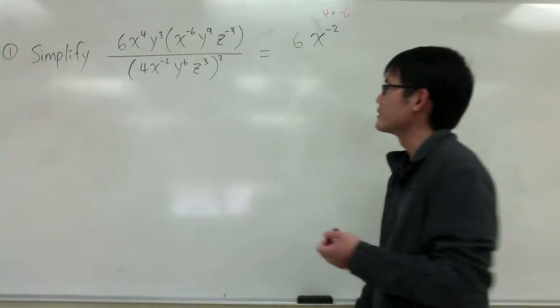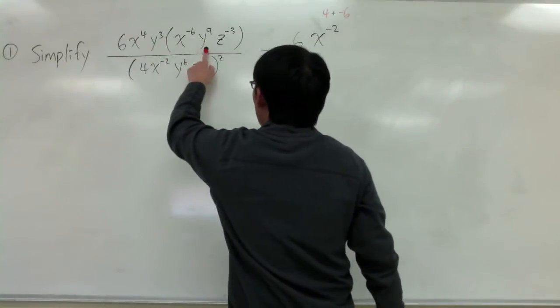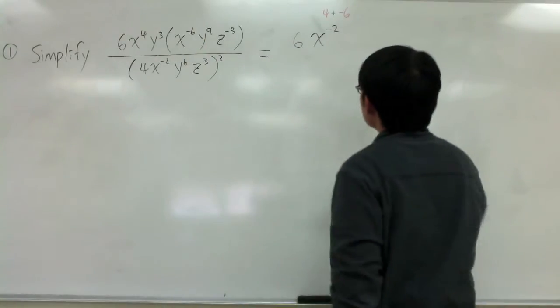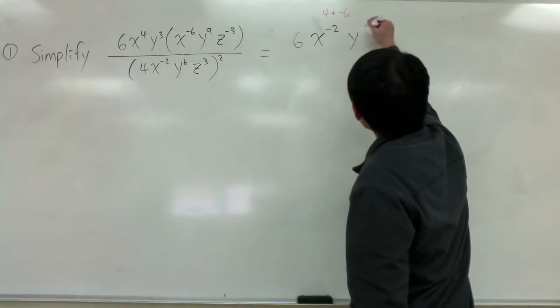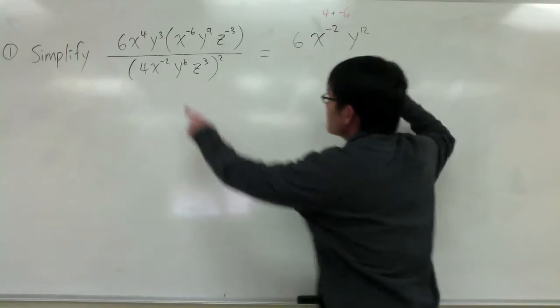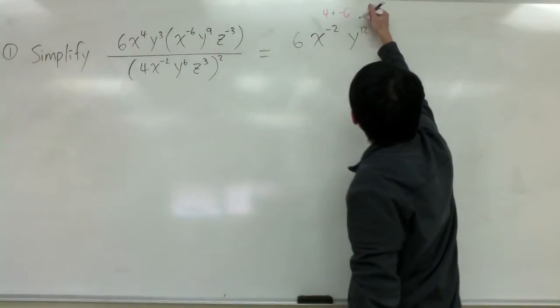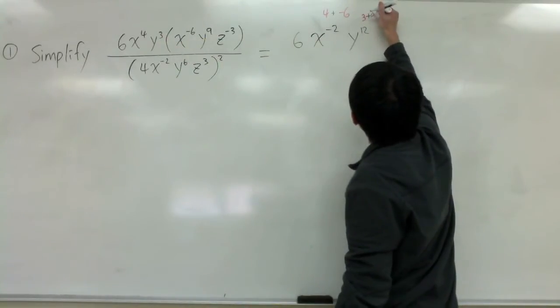Then, let's look at the y's. I have y to the 3rd power, y to the 9th power. Multiply it, I will get y to the 12th power. Again, because 3 plus 9 is equal to 12.